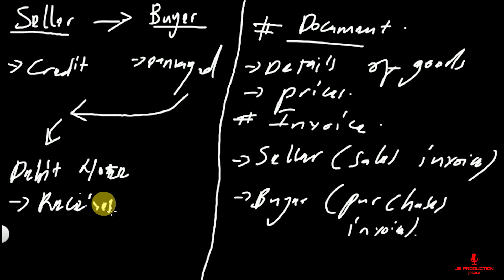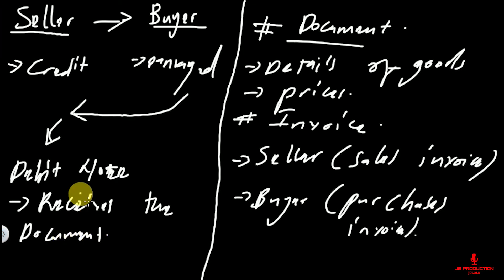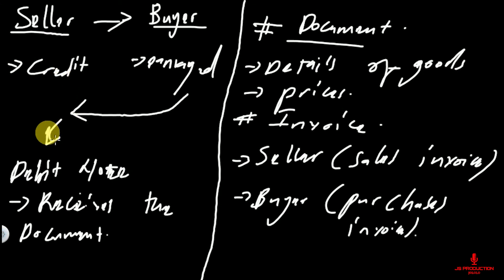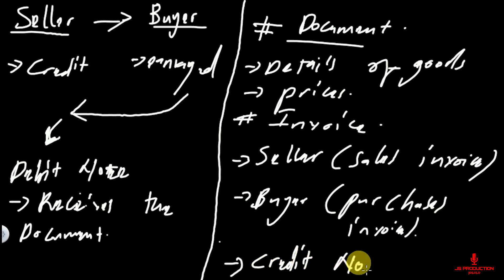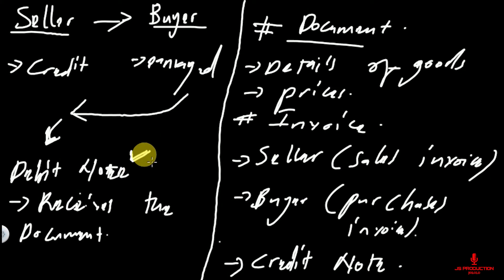When the seller receives the document, the seller is going to prepare a confirmation document showing the amount of goods that are going to be accepted as returned to the business. That confirmation document is referred to as the credit note, and it is going to be sent to the buyer. So the source document for the returns outwards day book is the debit note, and the source document for the returns inwards book is the credit note.